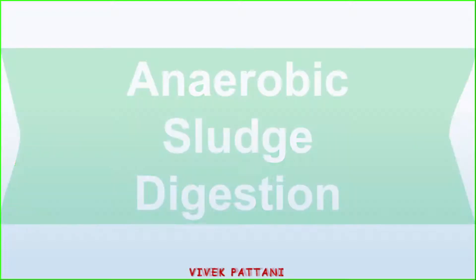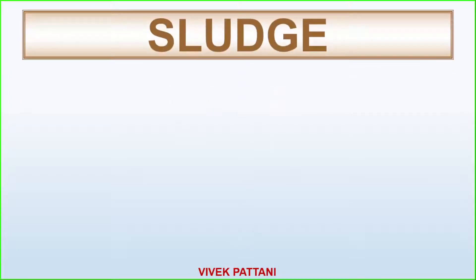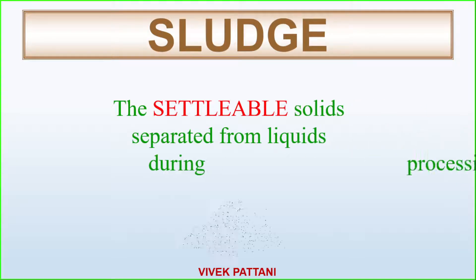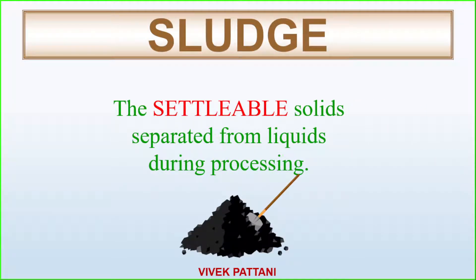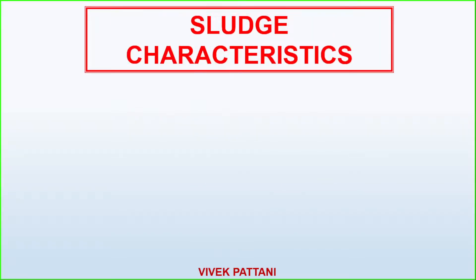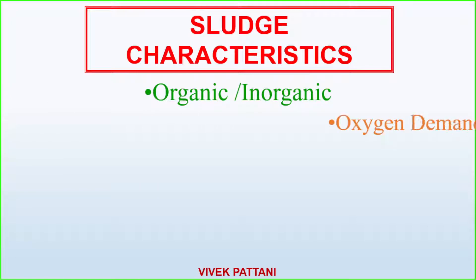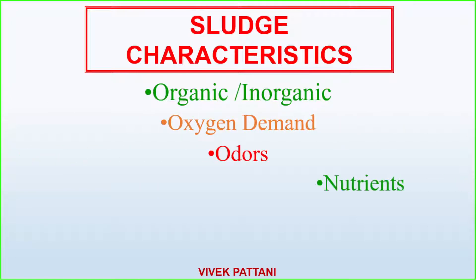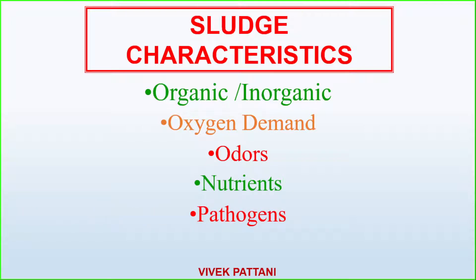Now let's talk about sludge. What is sludge? Sludge is a semi-solid material separated from liquids during the processing of wastewater treatment. The basic characteristics of sludge: it may be organic or inorganic, it has oxygen demand requirements, specific odors, nutrients, and pathogens will be present, as well as water.